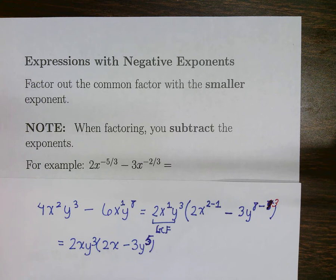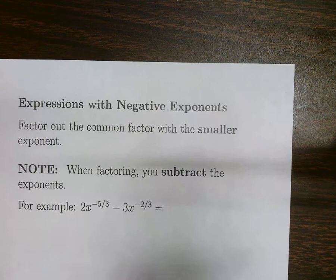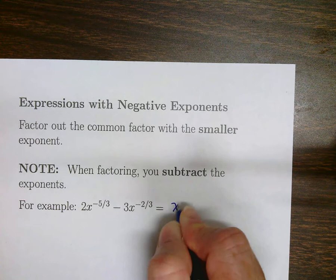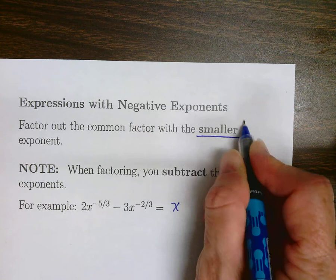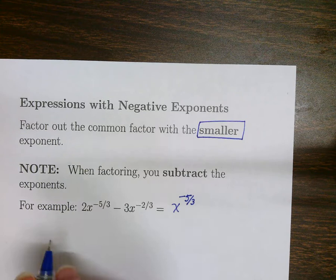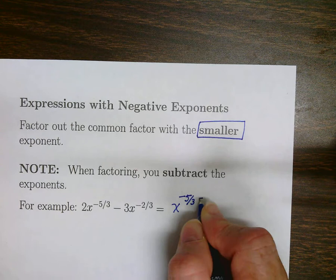So let's see how it works. We'll begin with the one that's a little bit easier. We look for the greatest common factor that we can factor out. 2 and 3 have nothing in common, so we're going to factor out an x. The question is what power do we factor out? We factor out the smaller exponent. Between minus 5 thirds and minus 2 thirds, the smaller exponent is minus 5 thirds. Remember, in the negative direction, minus 5 thirds is smaller than minus 2 thirds.